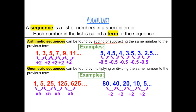Another example: 5, 4.5, 4, 3.5, 3, 2.5, and so on is also an arithmetic sequence because you can subtract 0.5 to get to the next term. Because they involve adding and subtracting, they are arithmetic.